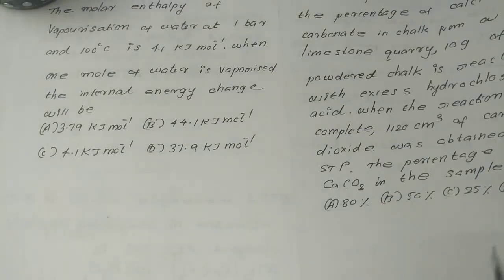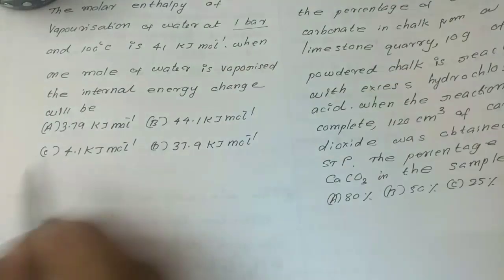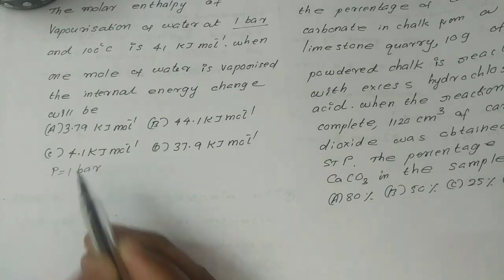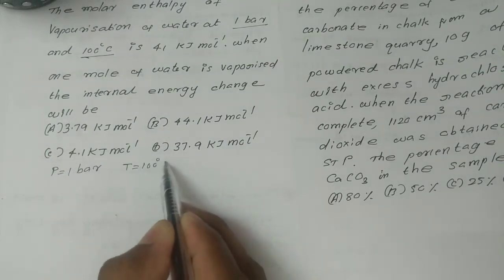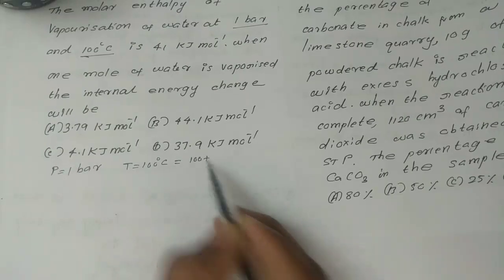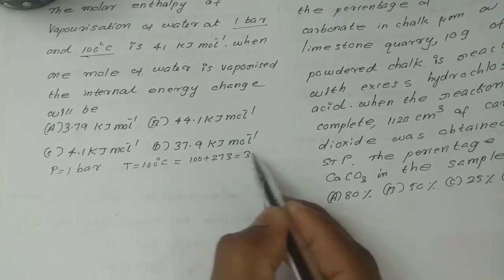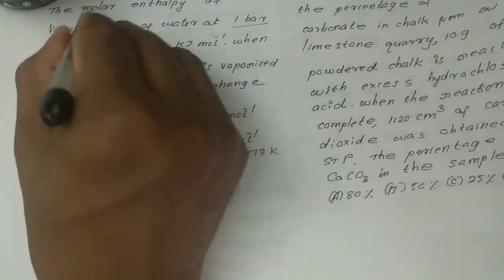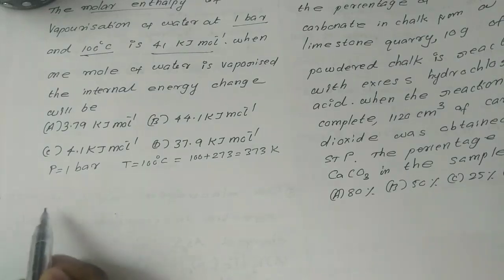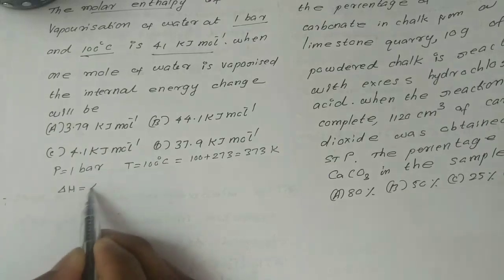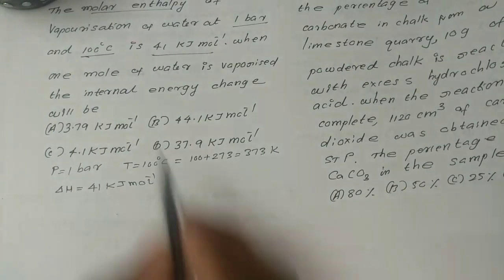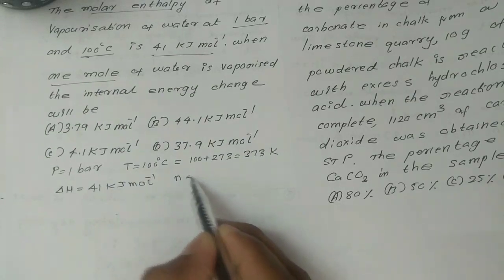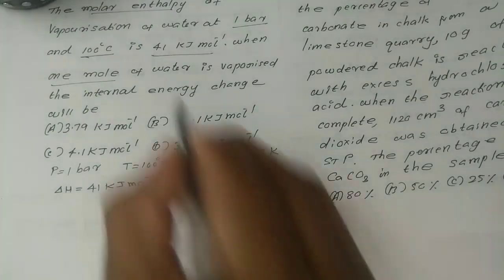The first question: The molar enthalpy of vaporization of water. Pressure is equal to 1 bar. Temperature is equal to 100 degree Celsius, which is 373 Kelvin. Molar enthalpy delta H is equal to 41 kJ mol raised to minus 1. When n equals 1 mol, we need to find the internal energy change.